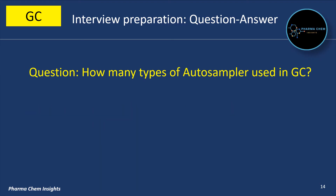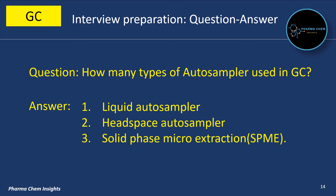Next question: How many types of autosamplers are used in gas chromatography? There are three types. First is liquid autosampler, second is headspace autosampler, and third is solid phase micro extraction, SPME.